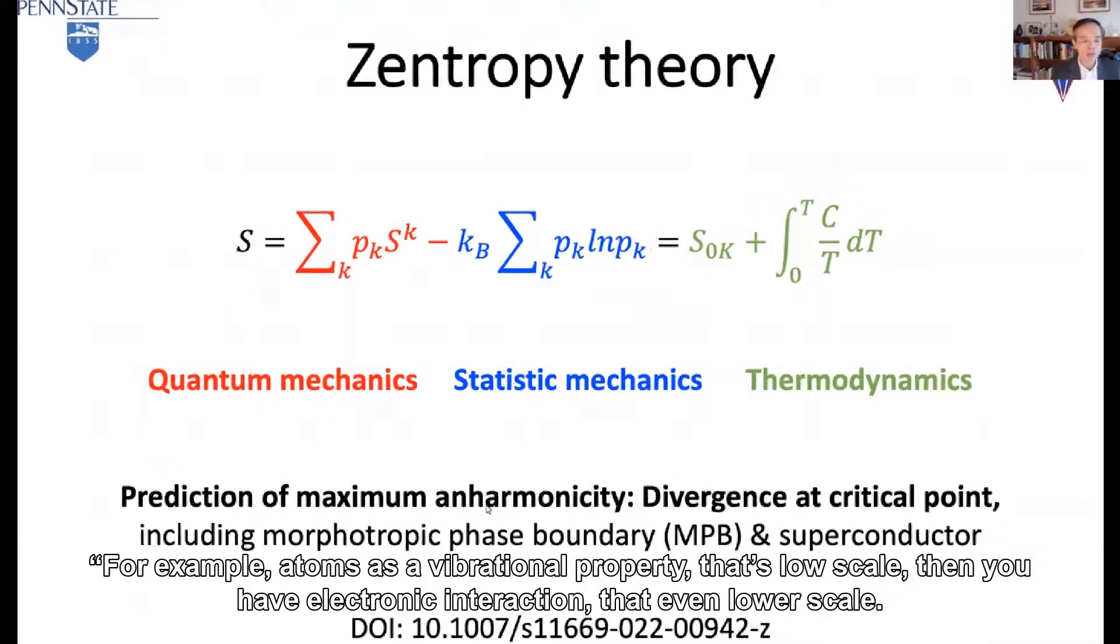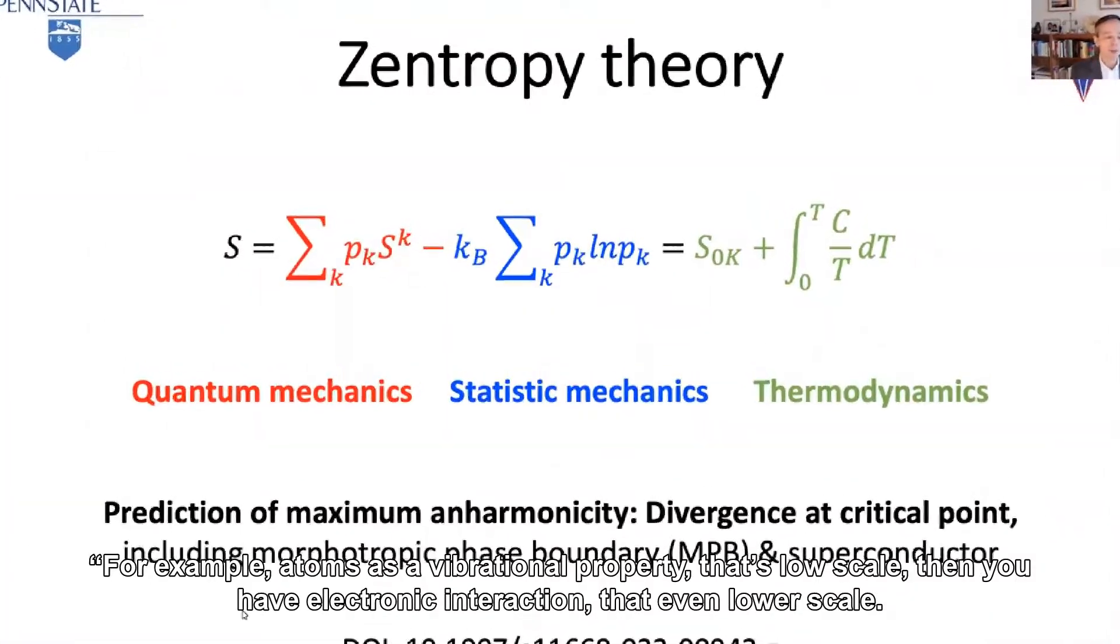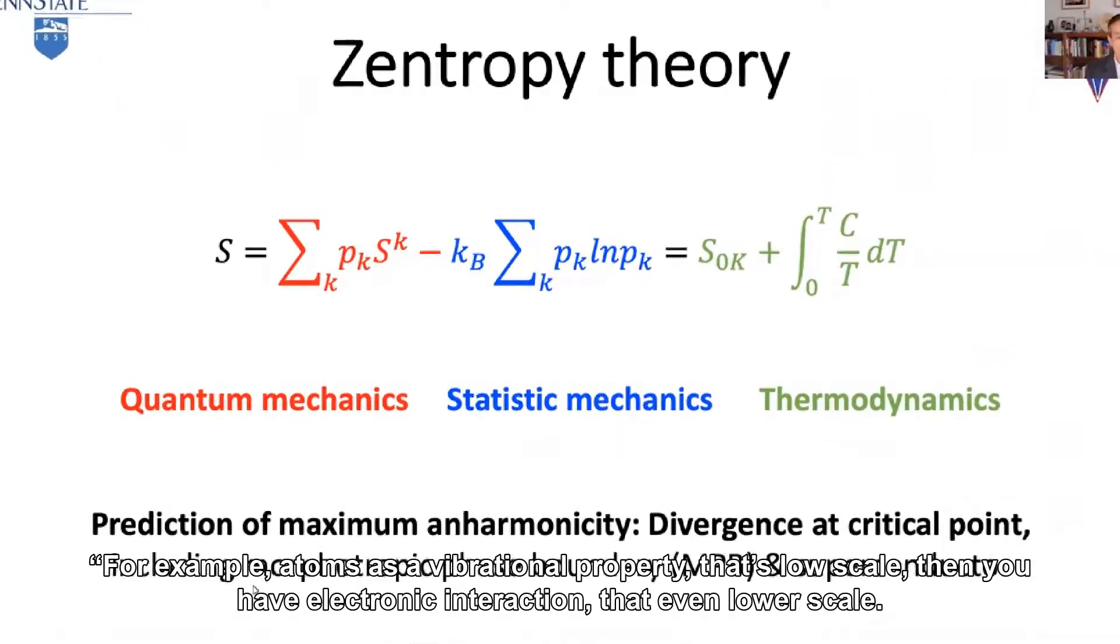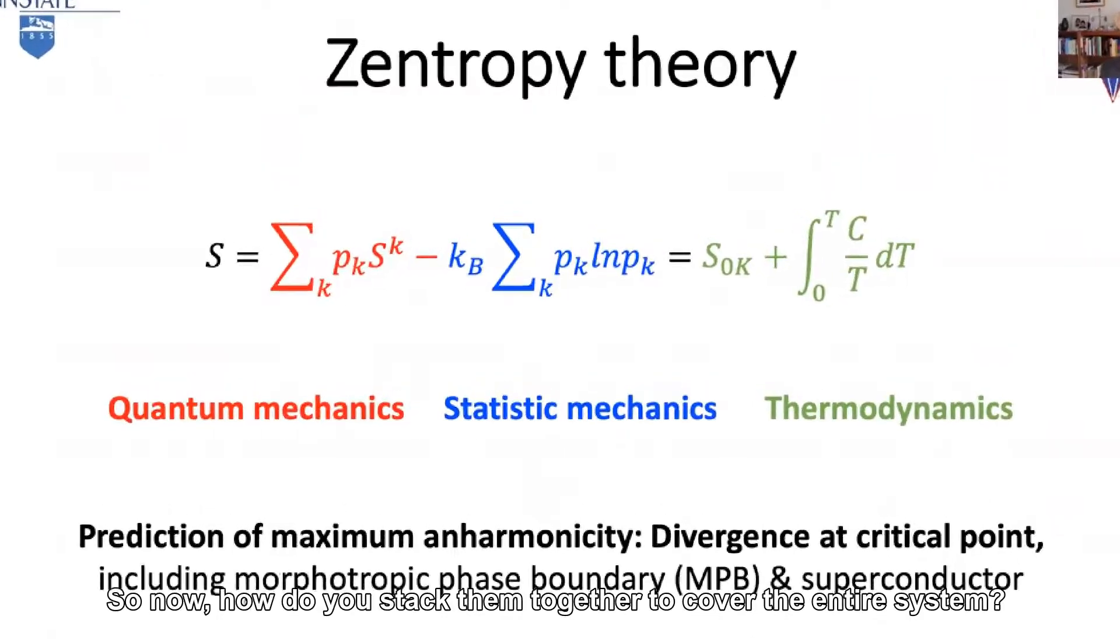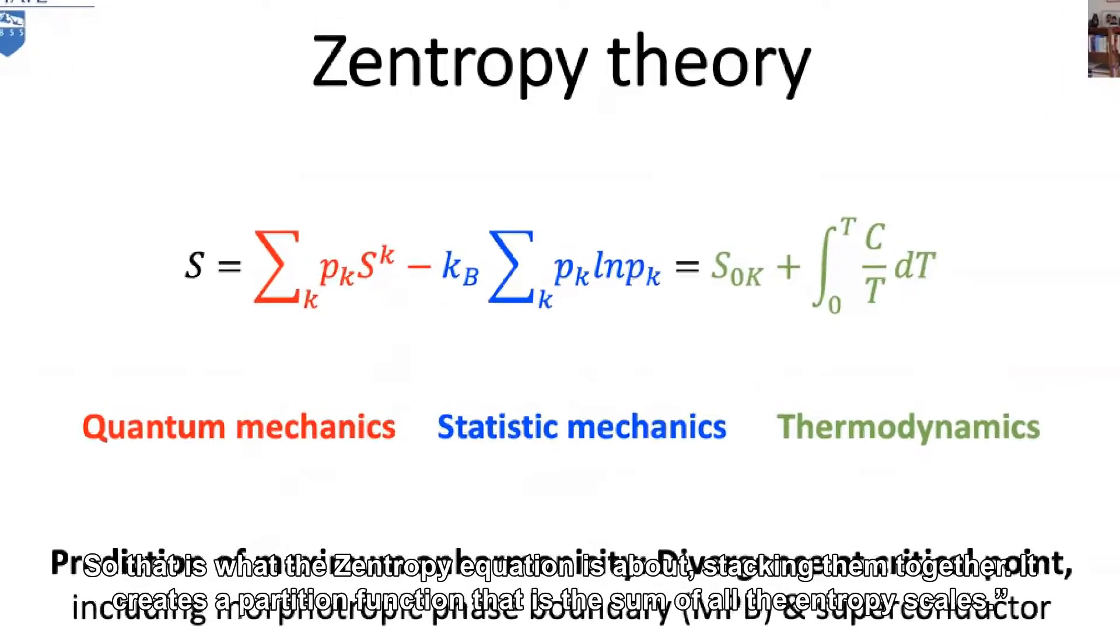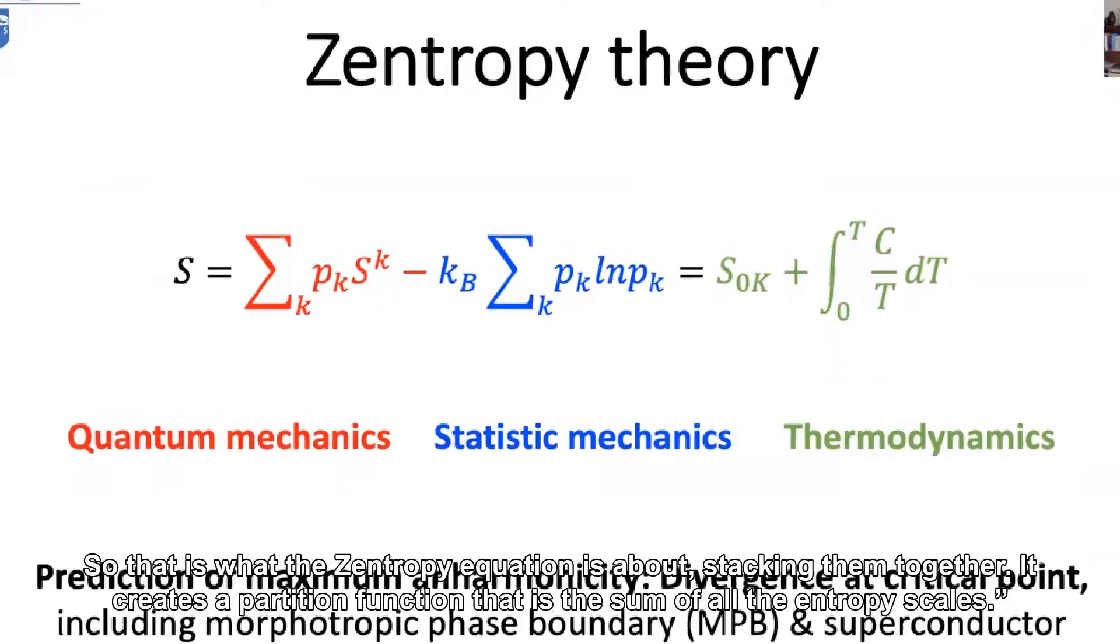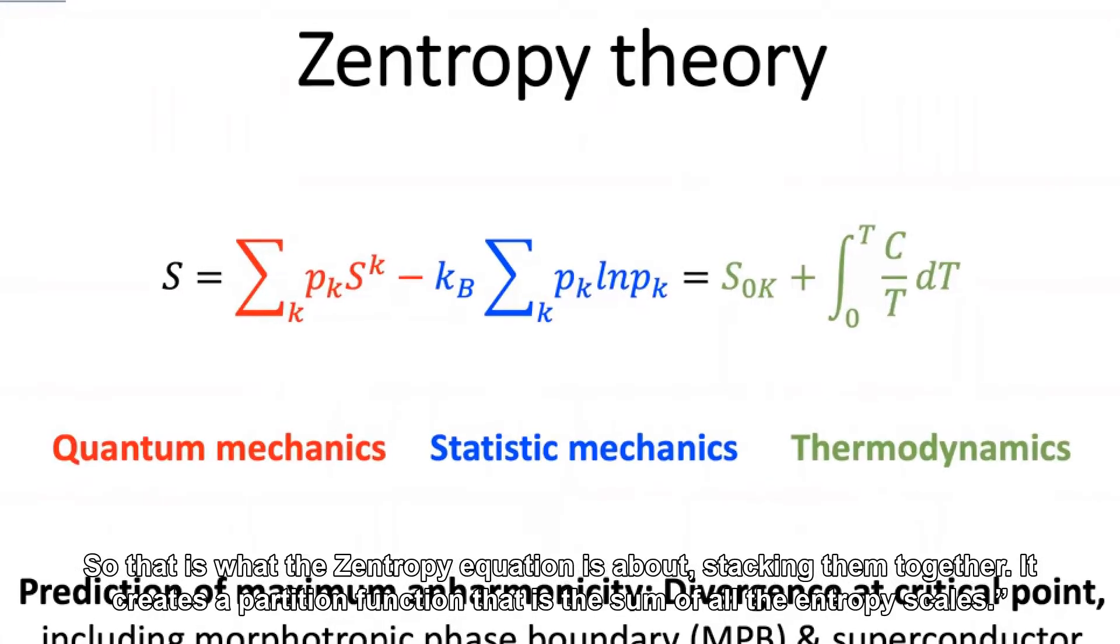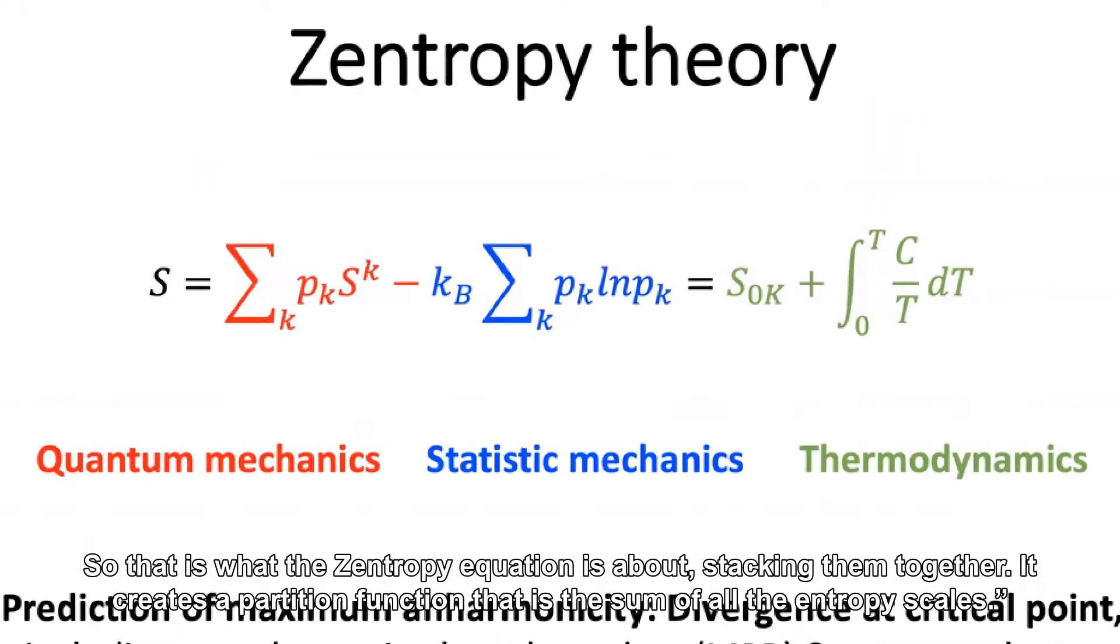For example, atoms have a vibrational property—that's low scale. Then you have electronic interaction, that's even lower scale. So now, how do you stack them together to cover the entire system? That is what the Zentropy equation is about, stacking them together. It creates a partition function that is the sum of all the entropy scales.